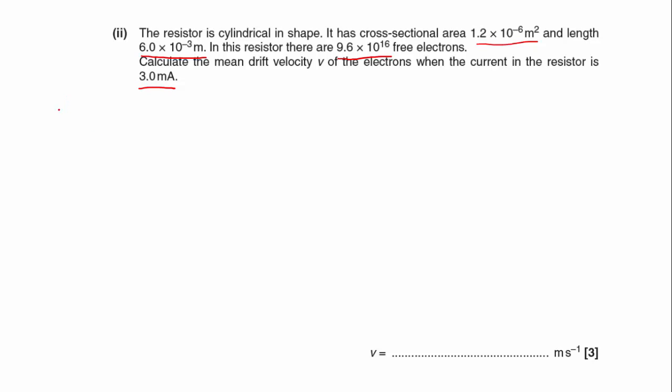Okay, so we need to know that the current is going to equal neAV. And if we just rearrange that, I'm going to get V is equal to I over neA. And if we just look at this formula, we know that that's the current, that's fine, we've got that.